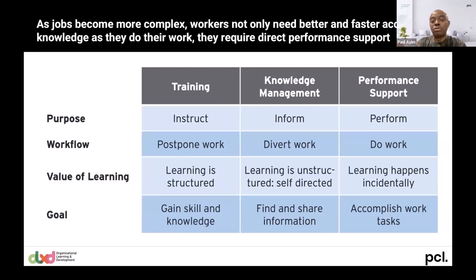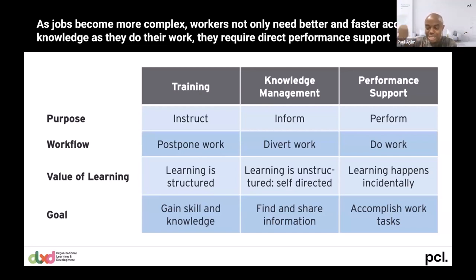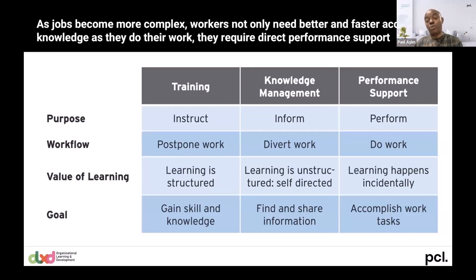The value of training is structured learning. For knowledge management it could be a blog an expert has written that you go and read. For performance support, learning is happening incidentally at that moment. On goals: training targets skill and knowledge; knowledge management targets finding and sharing the right information; performance support targets accomplishing work tasks. Moving to that performance support pillar helps people become more productive, efficient, and effective.